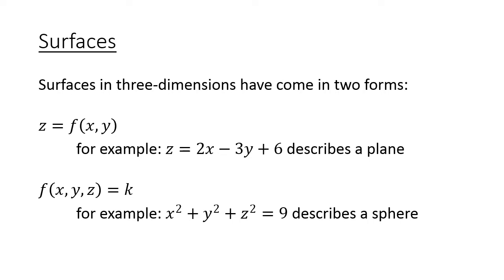Essentially, this is where we had z on one side, and we were able to get all the x's and y's on the other side of our equation. For example, z equals 2x minus 3y plus 6 would describe a plane as a function of two variables. The other types of surfaces — more prevalent at the end of chapter 12 — was when we had x's, y's, and z's all together on the same side. For example, x squared plus y squared plus z squared equals 9 would be our sphere of radius 3 in R3.